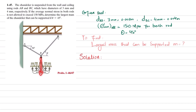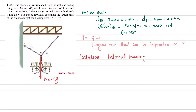We need to find the largest mass of the chandelier that can be supported by these rods. First step: define internal loading. Due to the suspended mass, the weight W equals m times g, where g is 9.81, so W = 9.81m. The stress in rod BC is represented as F_BC and the stress in rod AB is represented as F_AB. Theta equals 45 degrees.